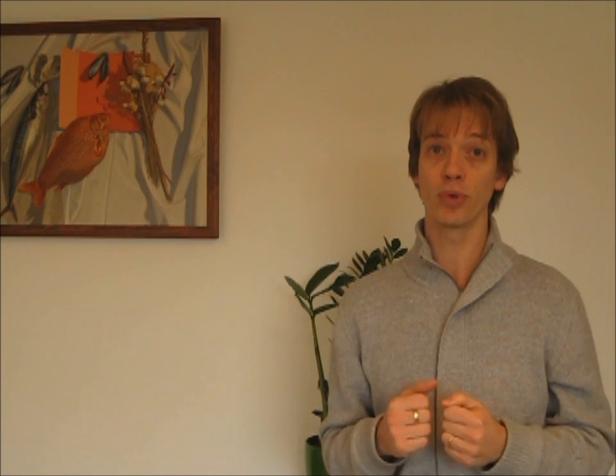Use number four is to do with the speed at which fruit ripens, either on a tree or off the tree. I can control the speed at which fruit ripens by using plant hormones.